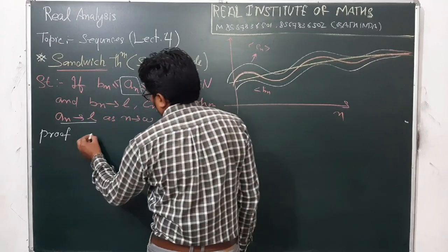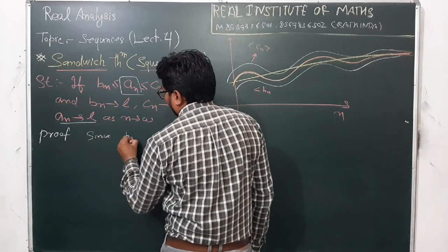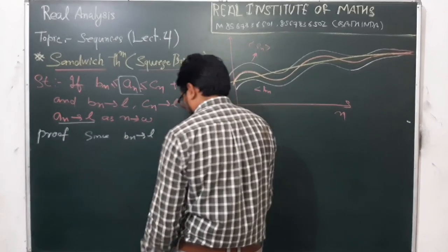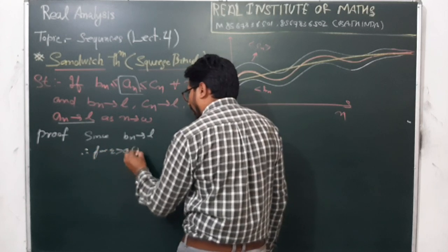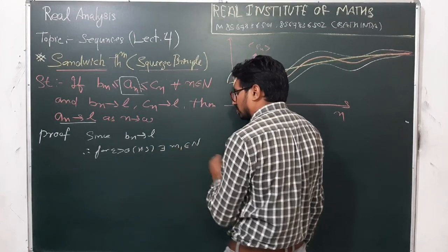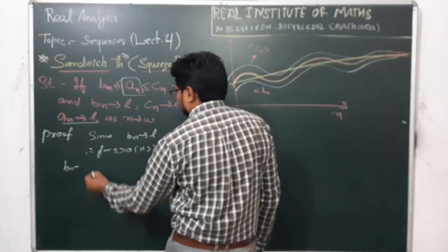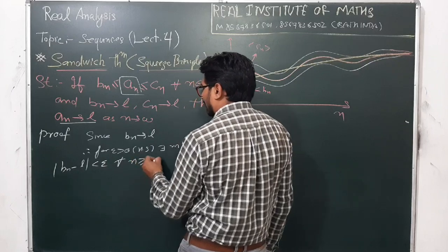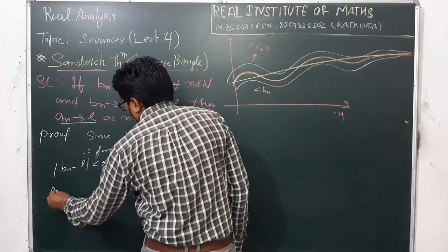bn converges to l. So by definition, for epsilon greater than zero, however small, there exists m1 belonging to the natural numbers such that |bn − l| is less than epsilon for all n greater than or equal to m1, where m1 is a natural number.